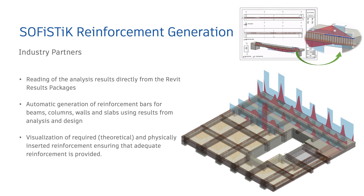Using the check command, required versus existing reinforcement in a framing element can be compared. If the reinforcement is adjusted, the diagrams react instantly, giving precise feedback to the engineer about how to optimize the reinforcement patterns. Similarly, the check section command compares existing reinforcement in user-defined sections of surface elements against the required reinforcement. Once the rebar modeling is complete, detailing can be done.